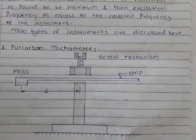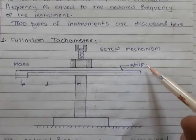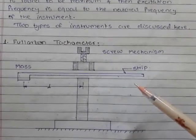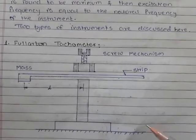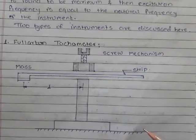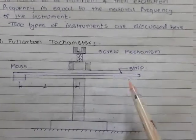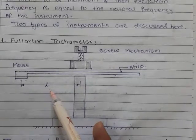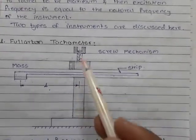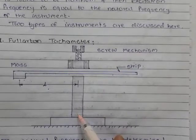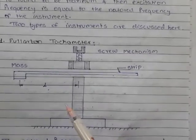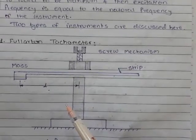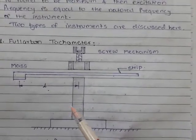The strip of the instrument is pressed over the vibrating body to find its natural frequency. We go on changing the length of the strip till the amplitude of vibration is maximum. By moving the strip to different positions, we can change the length from the axis of the screw. The excitation frequency is equal to the natural frequency of the cantilever strip, which can be directly scaled from the strip itself.